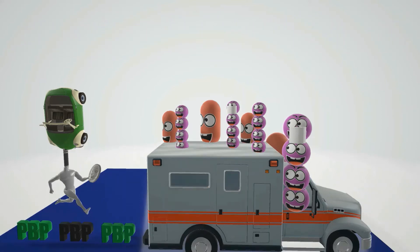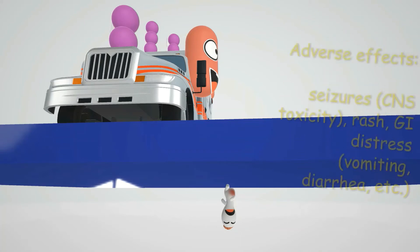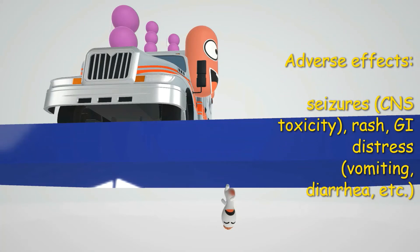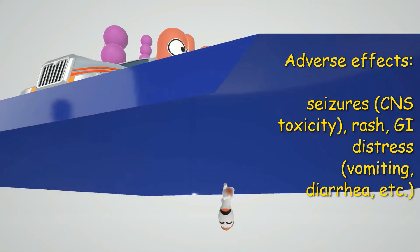Now let's talk about adverse effects. This random guy running reminds us of the adverse effects of Carbapenems. First, he's having seizures, reminding us of the CNS toxicity Carbapenems can cause. His stomach is red — there's a rash, reminding us of the rash Carbapenems can cause — and it's also red because he's in GI distress, another adverse effect that may include diarrhea and vomiting.